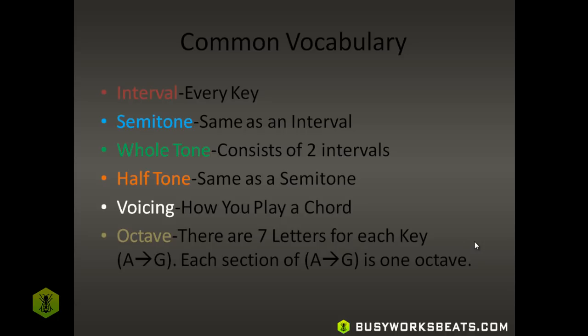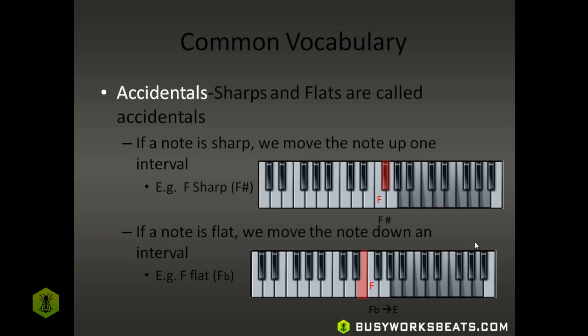Voicing is basically how you play a chord, and we'll get into that later in the course. An octave — remember there are seven letters for each octave, or seven keys: A through G. When we go up and down our keyboard, we're going up and down octaves. Each section of A through G is one octave. Another common term you're going to hear is accidentals — accidentals just means sharps and flats. In classical music theory it's harder to understand, but literally it just means flats and sharps.